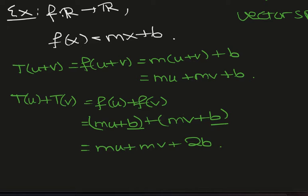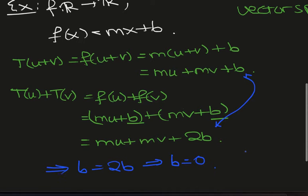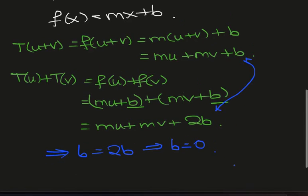Now if the map is linear, meaning it satisfies T(u+v) = T(u) + T(v), then these should be the same. But notice they're not the same. This implies that b equals 2b, and in fact they are equal if b equals 0. So for condition 1 to be true, we need b equals 0.